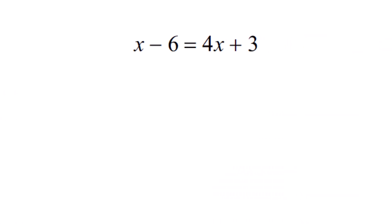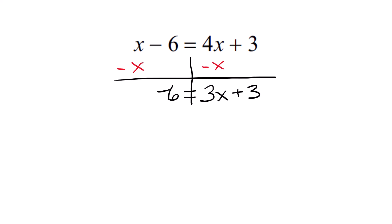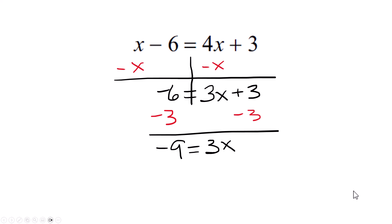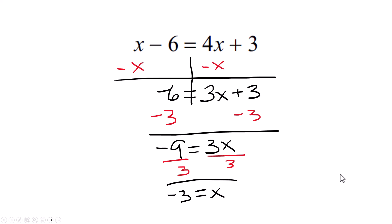Here's another one with variables on both sides. The x by itself is on the right side; the left side has the smallest x term, which is 1x, and the other is 4x. So I'm going to start by subtracting that x from both sides. Simplifying, negative 6 drops down and that equals 3x plus 3. Now look for the side that has too many things on it — that plus 3, we're going to subtract from both sides. We get negative 6 minus 3 is negative 9, and that equals 3x. Now it's the 3x's turn — divide both sides by 3. You don't want to divide until you're ready to divide. Negative 9 divided by 3 is negative 3.